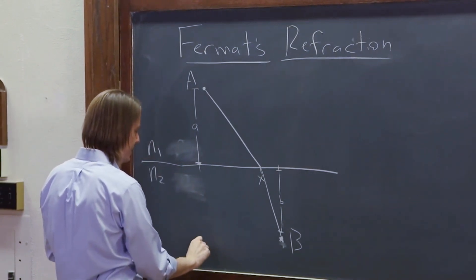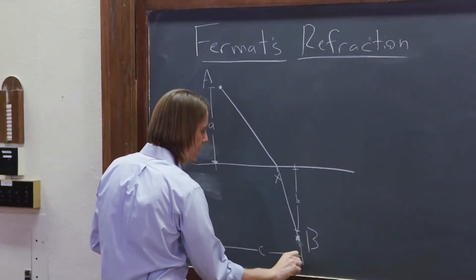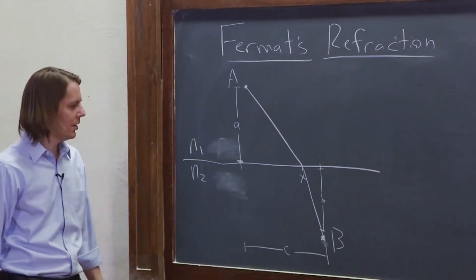So the distance, again, like last time, is C, is the horizontal distance from point A to point B.